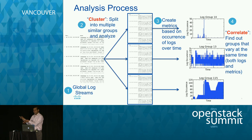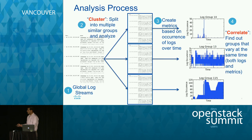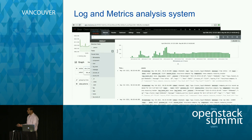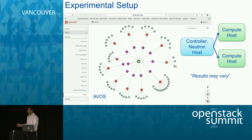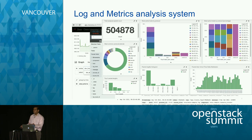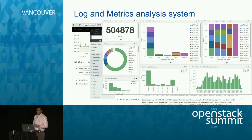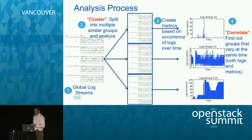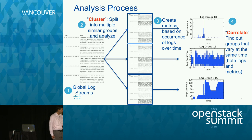All of these tools that you see here, we're starting to open source them. One tool is called AVOS. We're also starting to bring the machine learning aspects of our tooling into an open source project that we recently launched called Cognitive. We're making this part of the community, so you'll soon see these kinds of capabilities that you can start using on your own system.